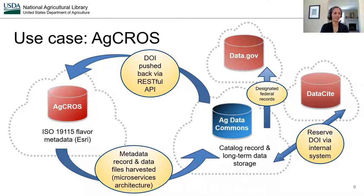One use case illustrating this metadata synthesis includes our work with the AgCross repository. AgCross specializes in geospatial data and uses an ISO 19115 flavor of metadata in an Esri platform. We ingest metadata and data by harvesting from AgCross using microservices architecture according to best practices and create the Ag Data Commons record, storing the data files locally. We then reformat that metadata to the DataCite format and reserve a DOI using an internal system, which then gets added back to the Ag Data Commons record. Finally, the DOI is pushed back to AgCross for display using a RESTful API.